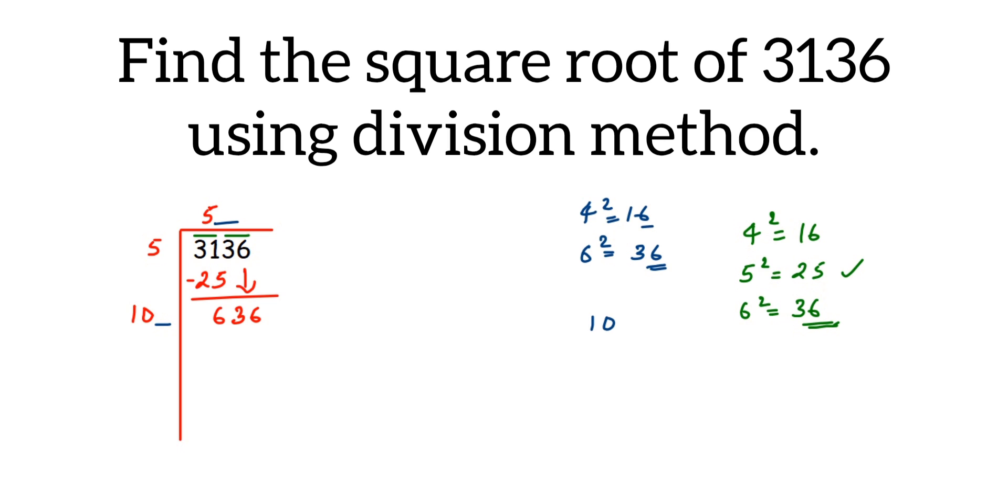So we can multiply with 4. So 4 times 4 is 16, 4 times 0 is 0, then 1 we have, then 4 times 1 is 4. Now 416 is less than 636. So we will go with 6 now.